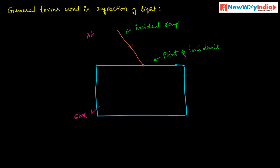The next term is the normal. If a line is drawn perpendicular to the surface of separation of two media through the point of incidence, this line is called the normal. It is perpendicular to the surface of separation and passes through the point of incidence.